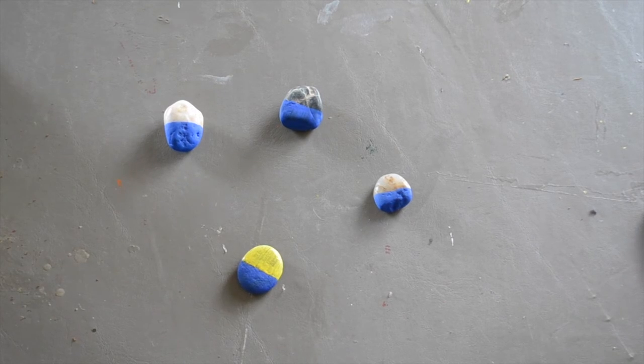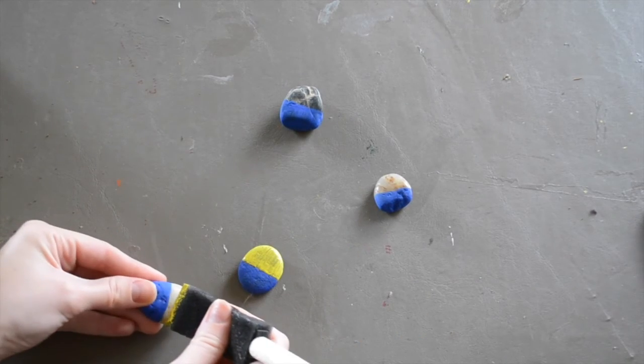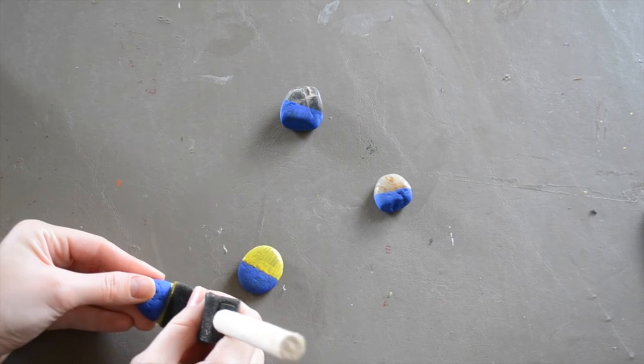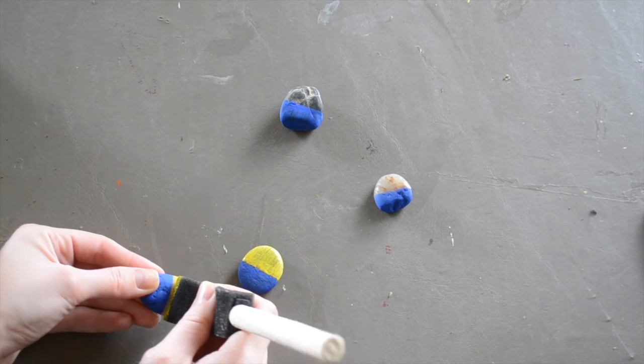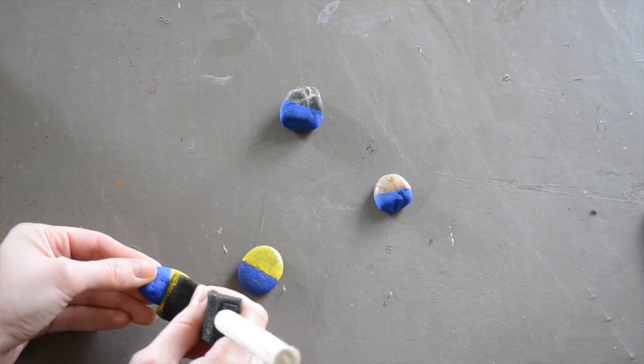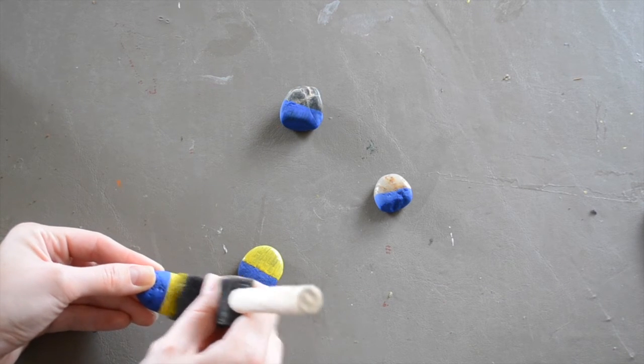So I'm going to go ahead and do this on all of my little pebbles, and then I'm going to let this dry for about ten to fifteen minutes, or until it's just completely dry to the touch, because the next step is adding little embellishments, and we don't want that to smear our coat of paint.